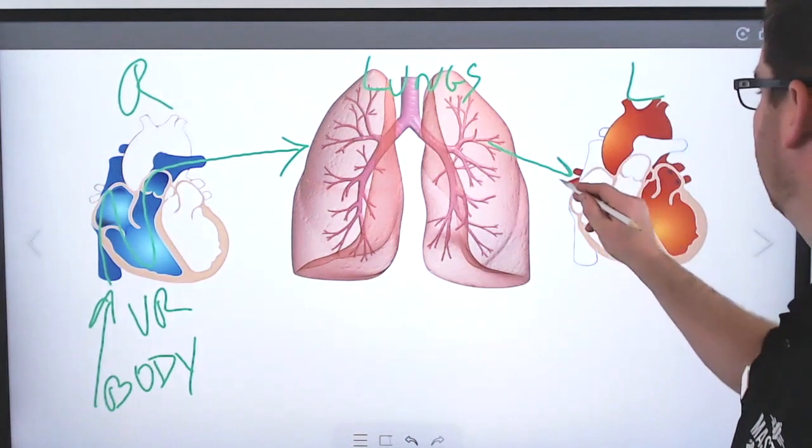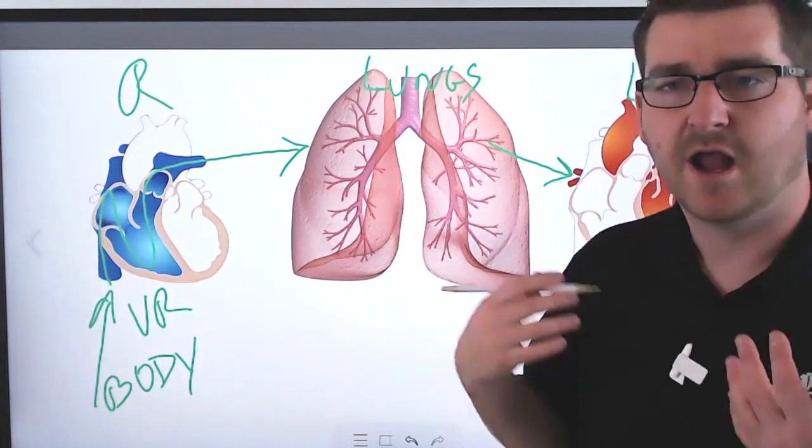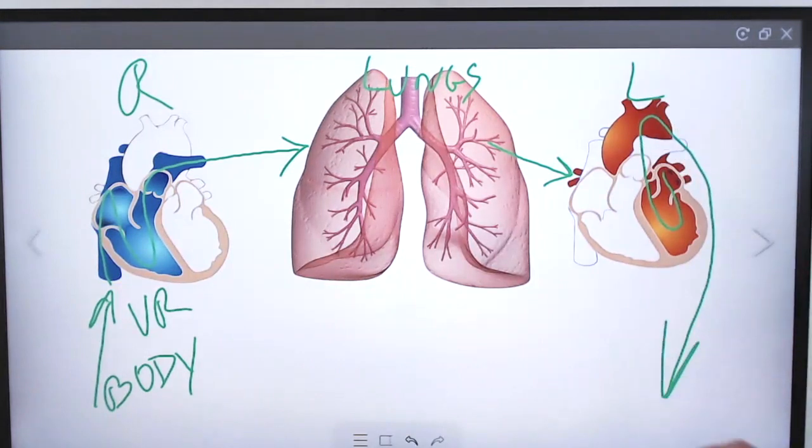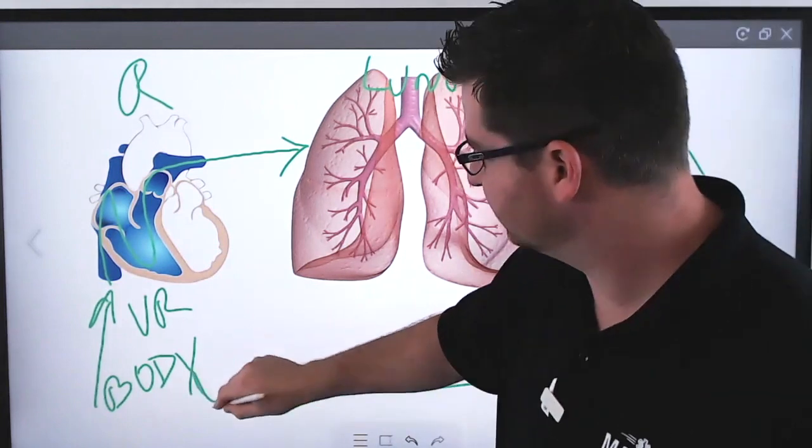Then it goes back towards the left side of the heart, and then it goes through the left atria and ventricles, kicks through the aorta, back out to the body, and then continues that cycle.